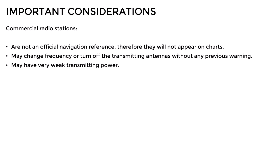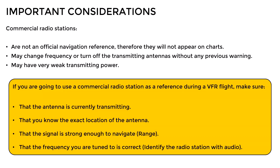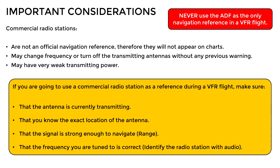With this in mind, if you are still planning to use commercial stations as a reference for navigation in a VFR flight, the following practices and recommendations should be taken into account. Make sure that the station is currently operating and you know the exact location of the transmitting antenna. Verify that the strength of the signal is adequate and the indication of the ADF is consistent, and if possible, try to verify the name of the radio station by listening to it. Never use the ADF as the only reference for navigation in a VFR flight, since the pilot has to navigate mainly by reference to visual checkpoints on the ground.